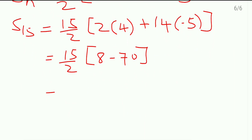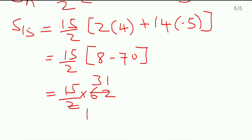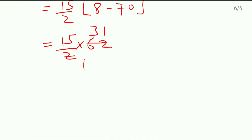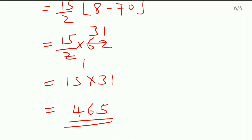So S15 = 15/2 × (8 − 70) = 15/2 × (−62) = 15 × (−31) = −465. The sum of the first 15 terms is −465.